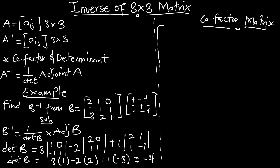For the first part, when you take the element at position (1,1), that cancels the first row and first column. The sub-matrix left is going to be -1, 1, 2, 1. Note that for the cofactor, you are not going to add the element to it — unlike when finding the determinant where you do add it.